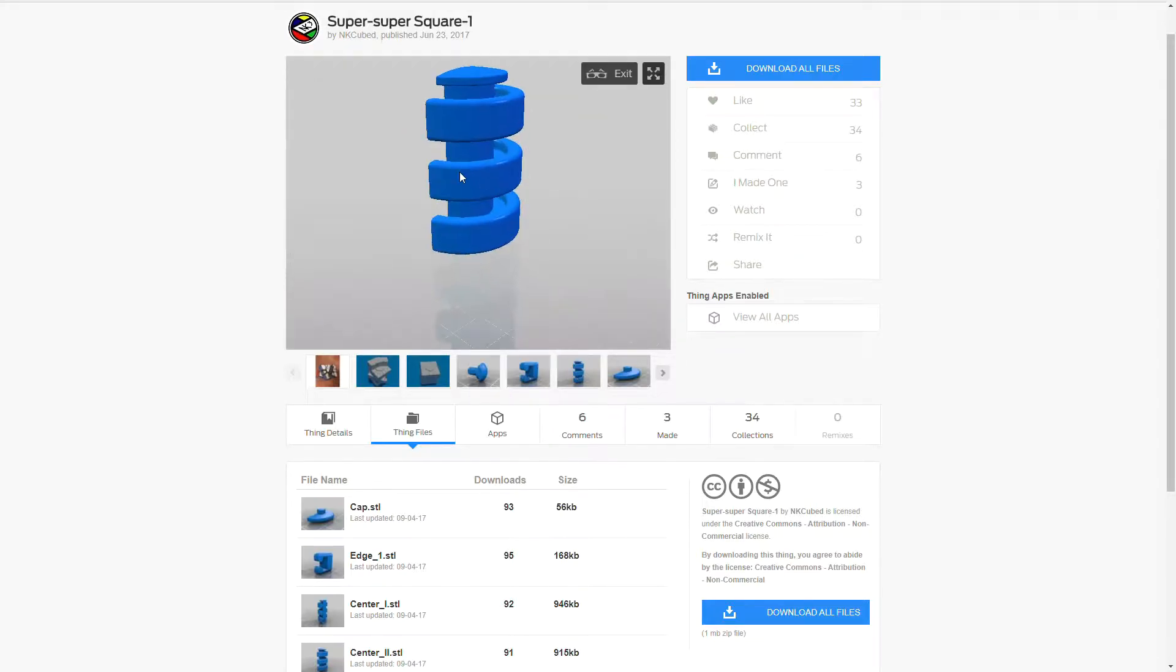You need to print one of each kind of core. Print both of them with the half part down, so basically this part down. You can clean it out later if you need to.